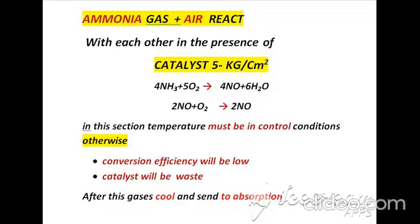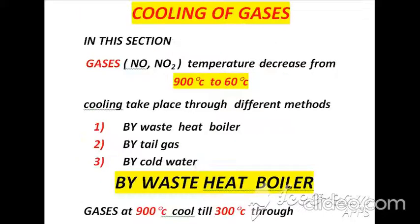After the reaction, gases are cooled and sent to the absorption section. The gases obtained from the ammonia converter are nitric oxide and nitrogen dioxide. We will decrease their temperature from 900°C down to 60°C using different cooling methods.